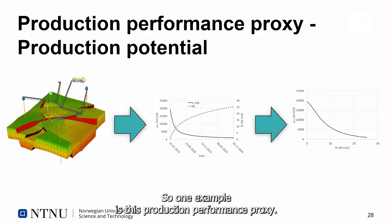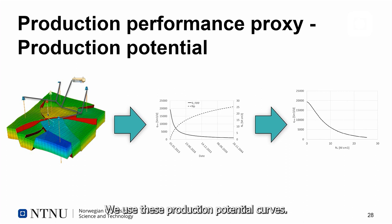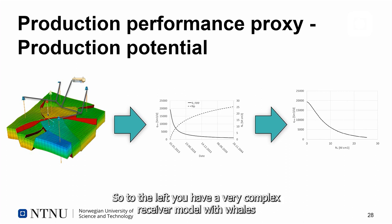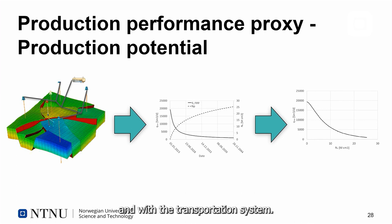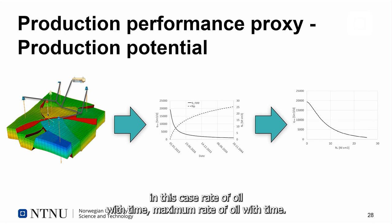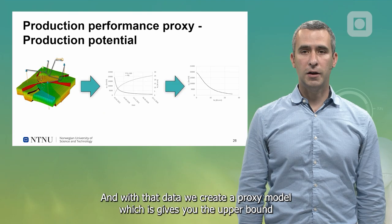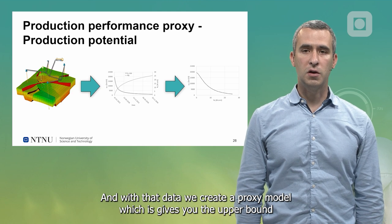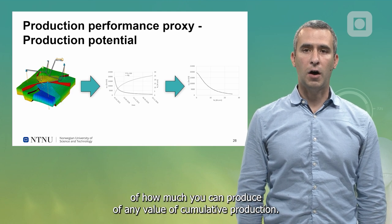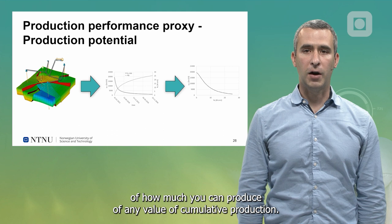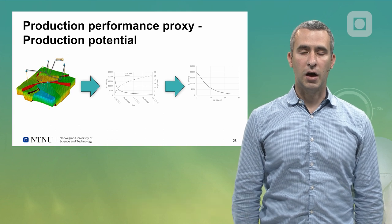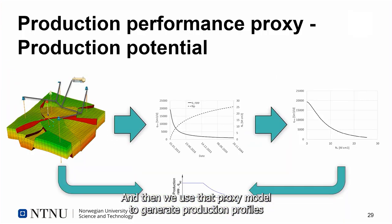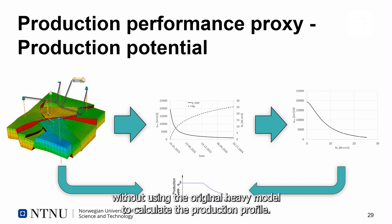One example is this production performance proxy. We use production potential curves. To the left, you have a very complex reservoir model with wells and the transportation system. From there, we generate data. In this case, rate of oil with time, maximum rate of oil with time. With that data, we create a proxy model which gives you the upper bound of how much you can produce at any value of cumulative production.